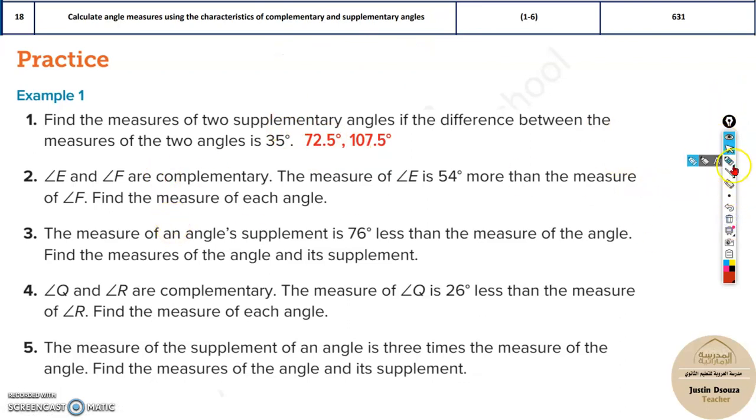But they have mentioned the angles E and F. So let me just do E plus F is equal to complementary. Complementary means right, right angle is 90 degrees. So when you add them you must get 90. Then they have also told the measure of E is 54 more than the measure of F. That means E is equal to 54 more than F, 54 plus F. But we have to write E and F together. So let me take this F to the other side, so it will be E minus F equals 54.